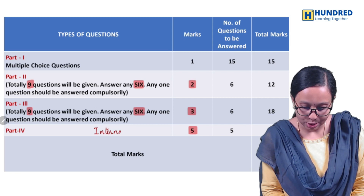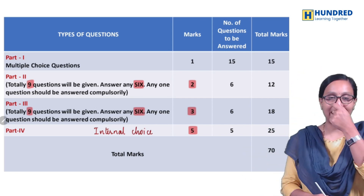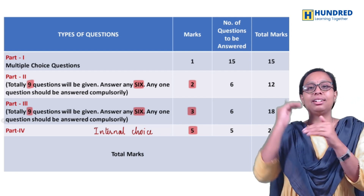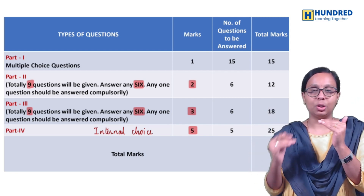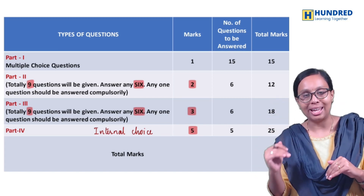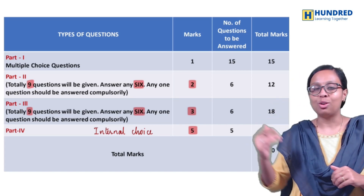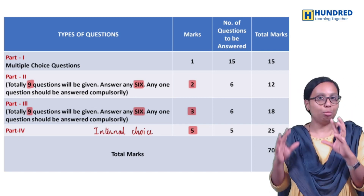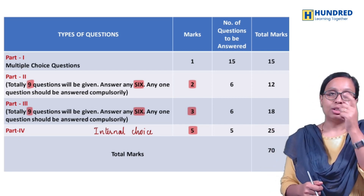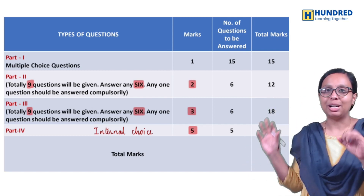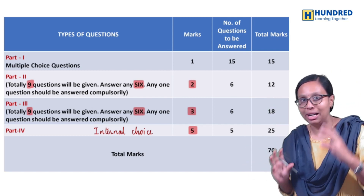Part 4 is five-mark questions with internal choice. There are 2 questions with internal choice. We now have 4 chapters and 5 questions to answer in this section.